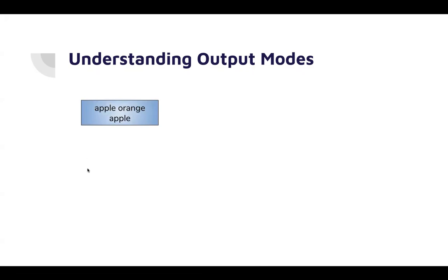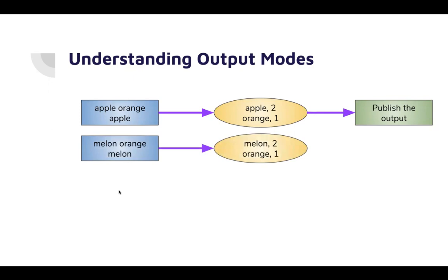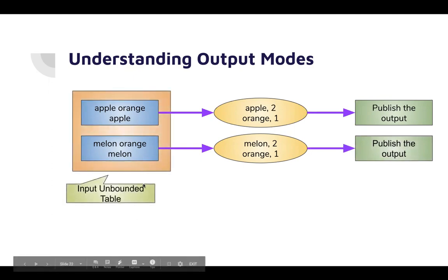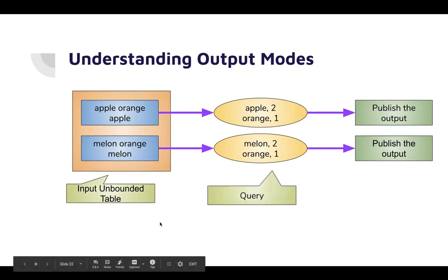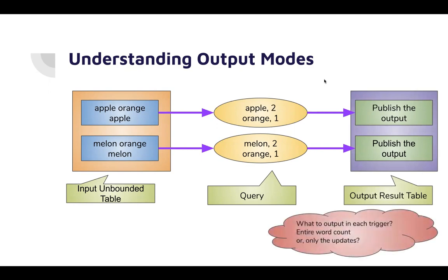Let's say we have one input, as we have seen in the previous example, which contains a line of words. This is the word count and then we publish the output. The next line, 'this is the next line', and for this particular micro batch this is how the word count looks like. We are going to publish the output at every trigger. This is our input unbounded table, this is our query which does the processing, and this is our output result table.